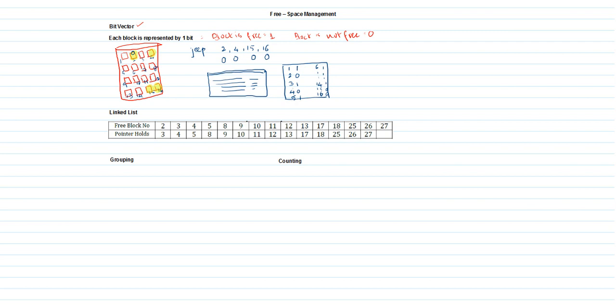Since the file is holding blocks 2, 4, 15, and 16, only those blocks hold bit vector value 0. The remaining blocks, which are not holding any content, are marked as 1, indicating these are free memory locations that the operating system can allocate at any point. This is free space management using bit vector.